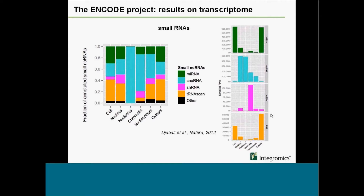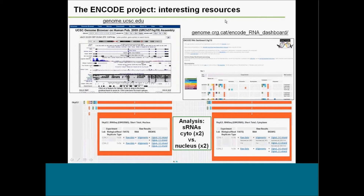At Integromics, we came back to data provided by the consortium and ran our SixSolve workflow on these results to first check if we can reproduce the results, then look further into the decomposition of the signal. We use publicly available resources — everyone knows the UCSC platform with its convenient genome browser, where you can also download ENCODE data. There is also the RNA-seq dashboard hosted at the CRG in Barcelona.